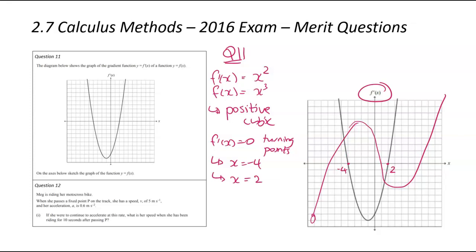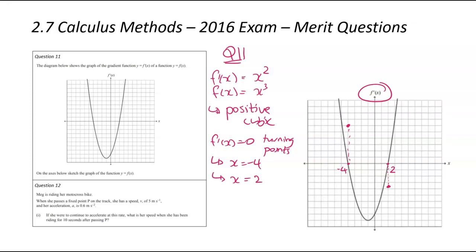A positive cubic starts down the bottom, goes up, then goes down, then goes up again. We place our turning points at x equals negative 4 and x equals positive 2, then connect the dots in a rough cubic form — starting down, up to the first turning point, down to the second turning point, then up again with arrows. It's positive because it's going upwards, and it has turning points at those two values.